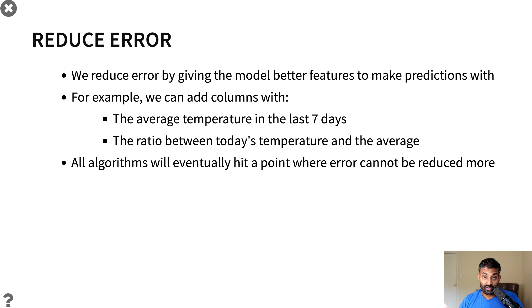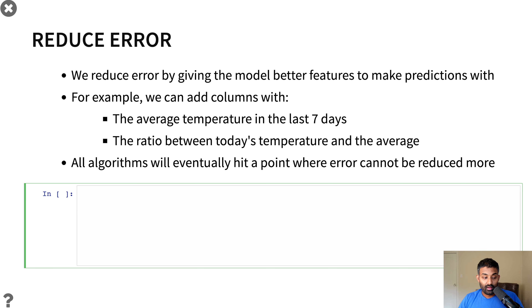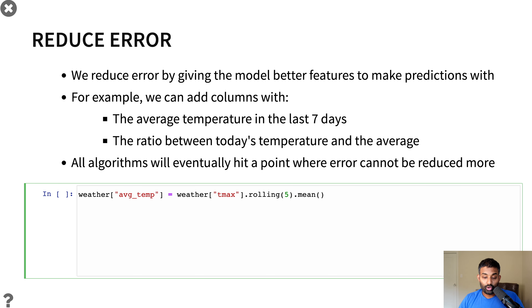Generally the best way to reduce error is to either give the model more data or give it better features — this is called feature engineering. We're not gathering more data, but giving the algorithm a better view into the data we have. For example, we could add a column showing the average temperature over the last seven days, and a column showing the ratio between today's temperature and that average. Eventually all algorithms hit a point where error can't be reduced further — you'd need to add more data, switch to a better model, or accept the limitation.